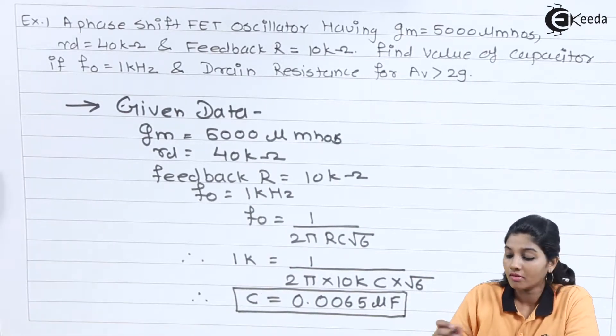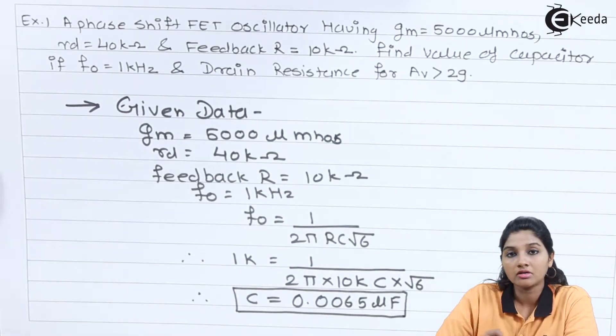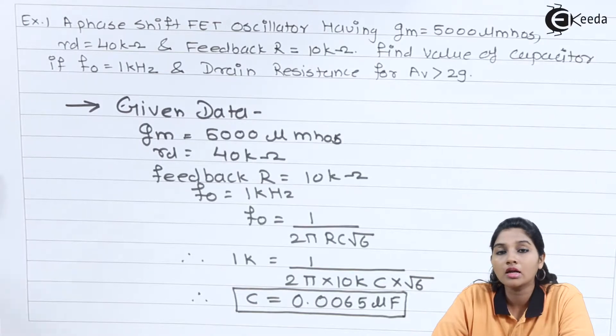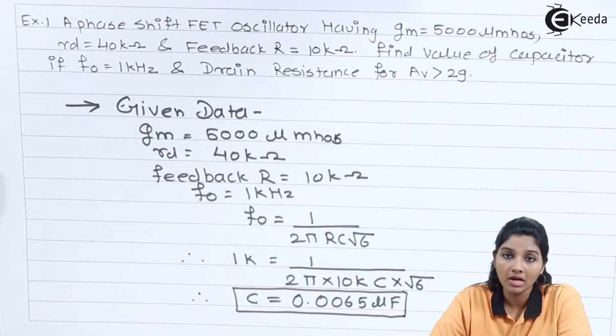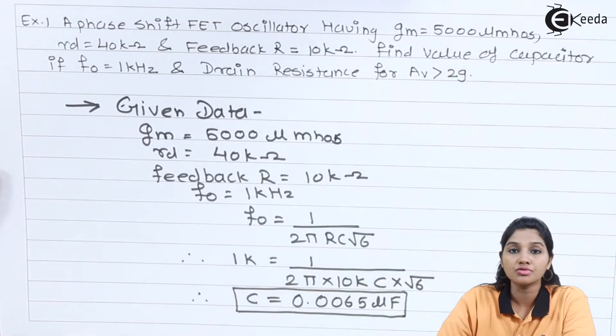So in this way, if the value of frequency and other factors are known, then we can calculate the value of any other component. Now, next thing is to find out drain resistance, that means capital RD, when AV is equal to 29.